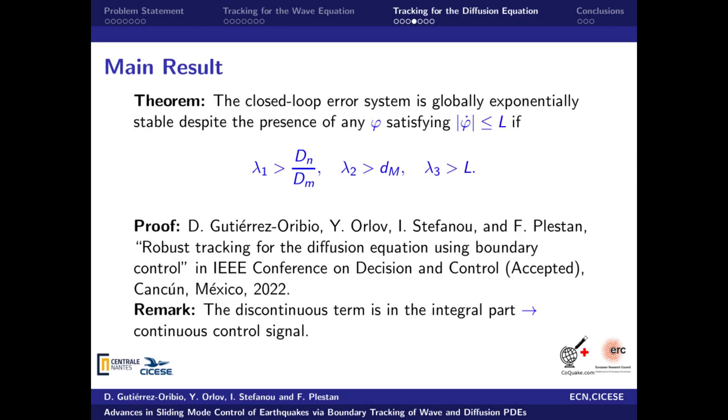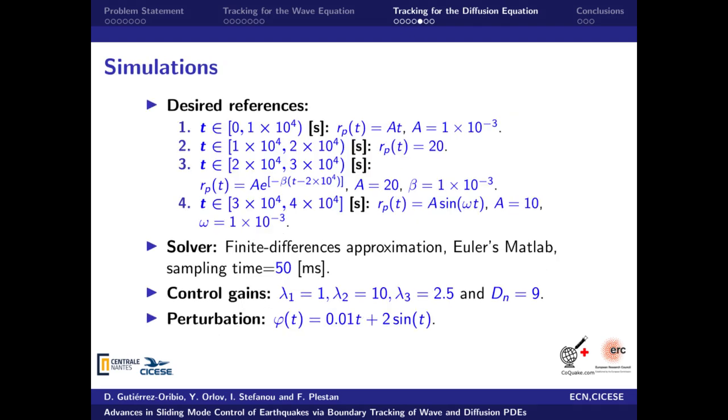We can show that the closed-loop error system is globally exponentially stable, despite the presence of Lipschitz with respect to the time disturbances, if the control gains are designed as shown. Due to the fact that the discontinuous term is inside of the integral part, the control signal generated is continuous, which can reduce the chattering effect. The proof of the theorem and more details can be found in our previous work from the 61st Conference on Decision and Control.